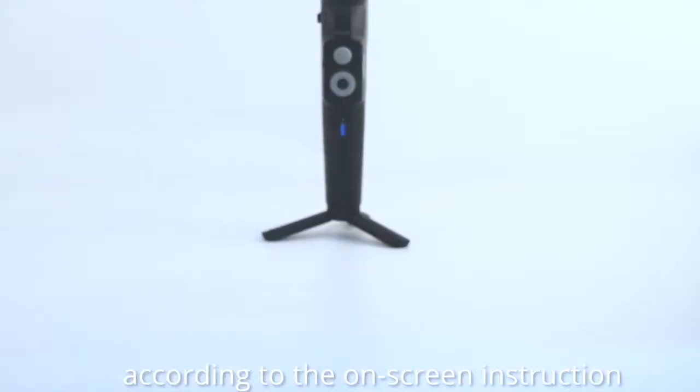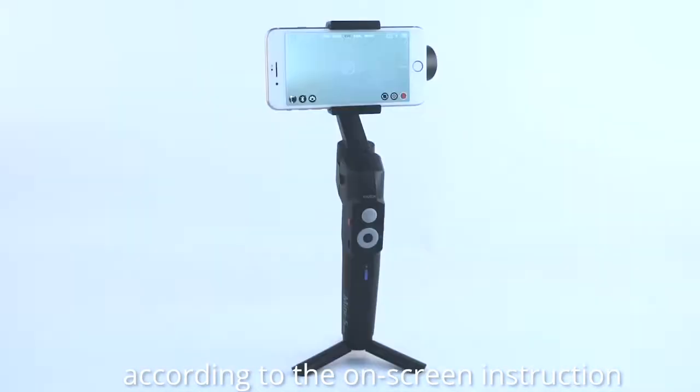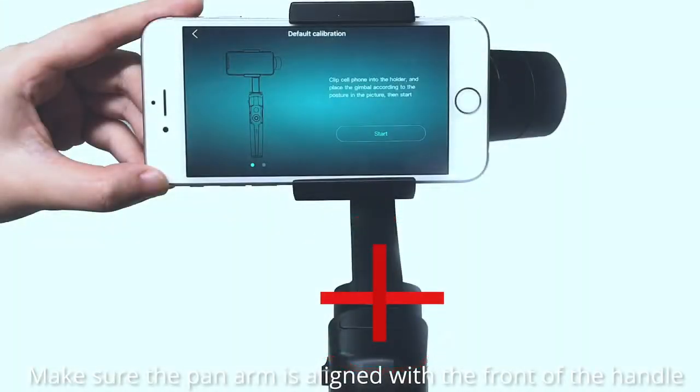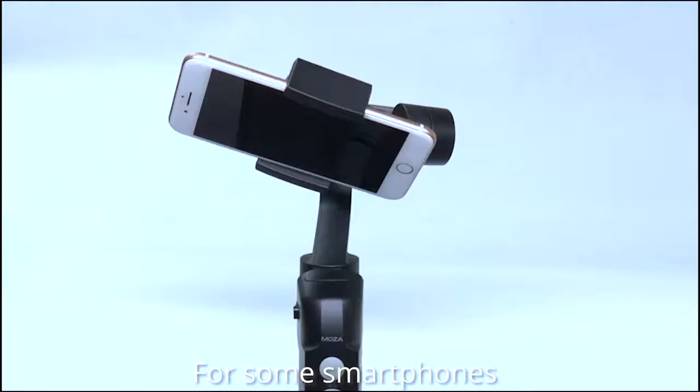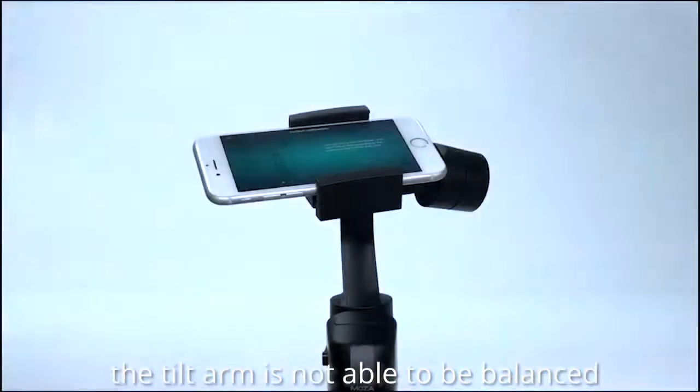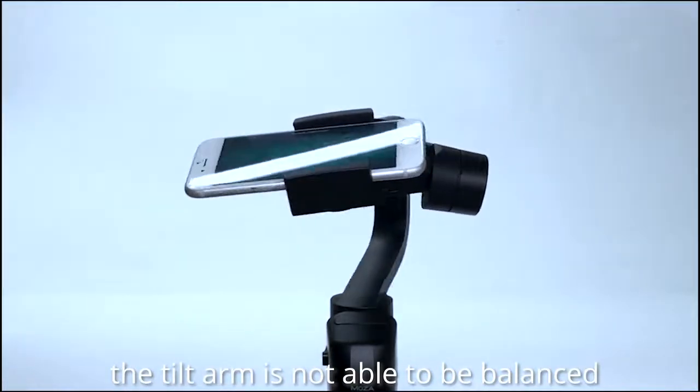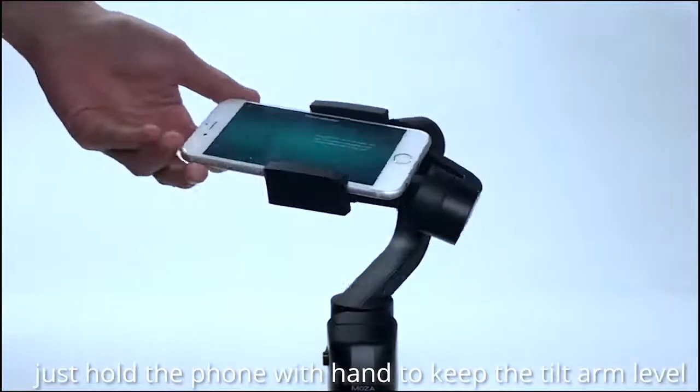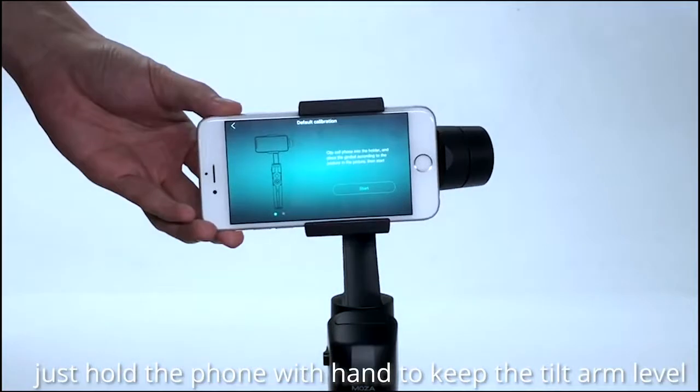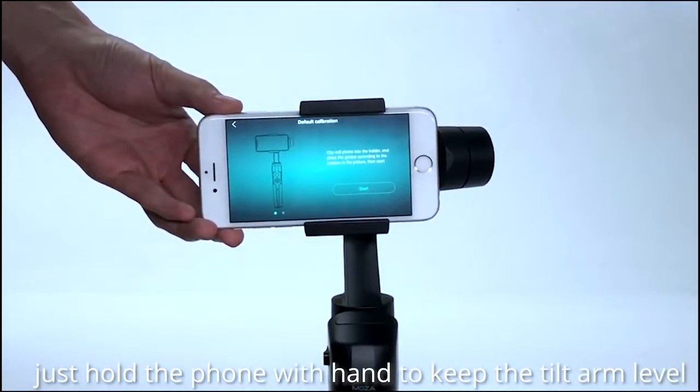Stand the gimbal on a flat surface according to the on-screen instruction. Make sure the pan arm is aligned with the front of the handle. For some smartphones, the tilt arm is not able to be balanced. This won't affect the actual calibration. Just hold the phone with your hand to keep the tilt arm level.